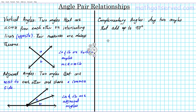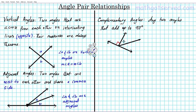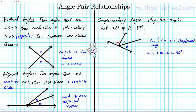Let me give you an example. We have a straight line, and the left side here is 90 degrees, which is indicated with the box. We have two angles here — angle A and angle B. In this particular situation, these two angles are complementary. Angle A and angle B are complementary because the measure of angle A plus the measure of angle B is equal to 90 degrees. Keep that in mind.